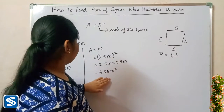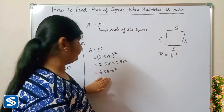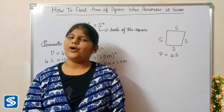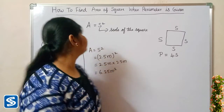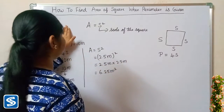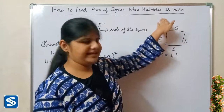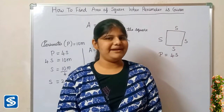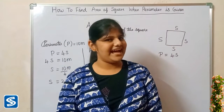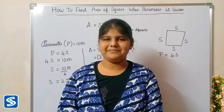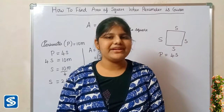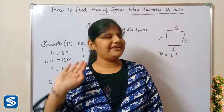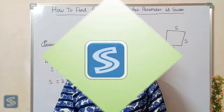So the area of the square is 6.25 meters square. Hope all friends understood how to find the area of a square when the perimeter is given. If you like my video, please like, share, subscribe, and press the bell button so you can receive all my updated videos. Thank you.